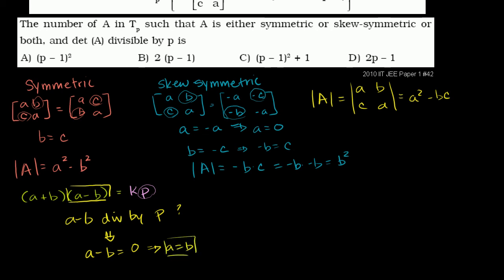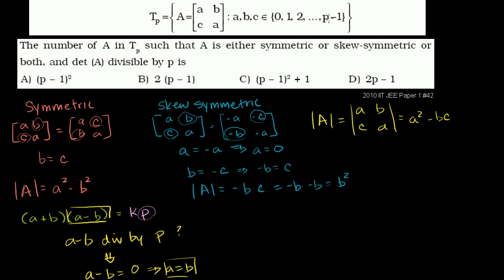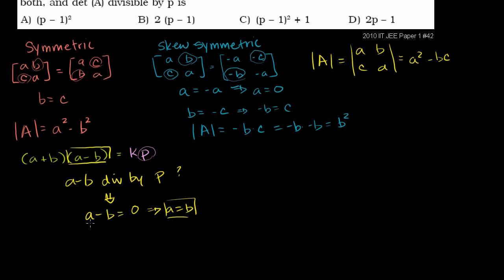There are P possibilities where A equals B: both equal 0, both equal 1, both equal 2, all the way up to both equaling P minus 1. So there are P possibilities for the case A equals B.